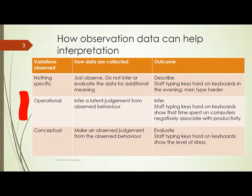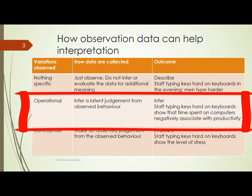The second is operational, and we make a latent judgment. We try to relate that to something. For example, we take staff members typing keys hard on a keyboard, and it shows that the time spent on computers is negatively associated with productivity. The time spent is used as an observational variable, and typing hard on a keyboard — how frequently they type hard — is another. So from both observation and data, we can see whether there is a negative association.